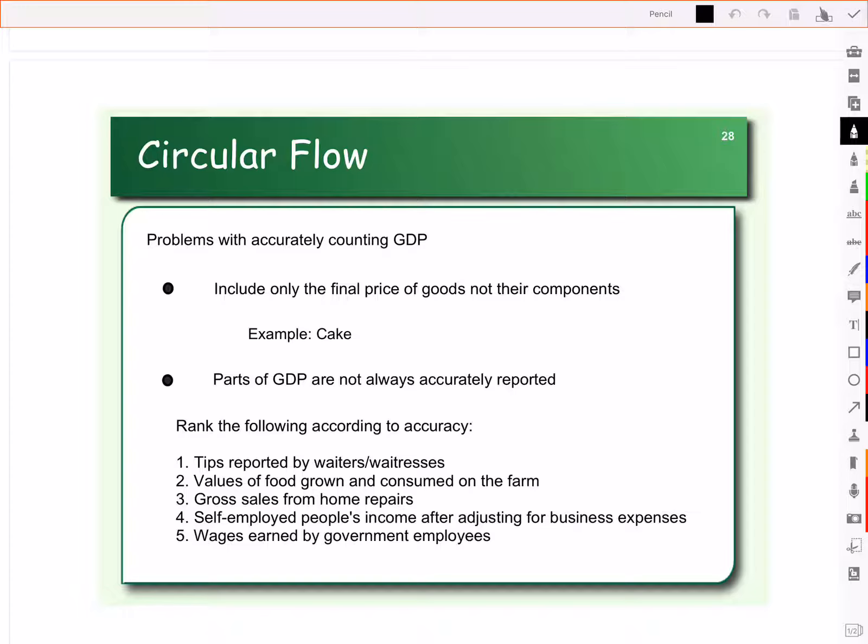Because if we are bartering, so we're trading goods for goods, it doesn't tend to get reported as sales to the government. If we are self-employed or we have tips, we don't tend to report all of it as income to the government. And all of these fall under GDP.